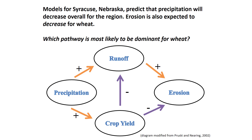This is a model for Syracuse, Nebraska, which predicts that precipitation will decrease overall for the region. Erosion is also expected to decrease for wheat. The dominant pathway is: a decrease in precipitation leads to a decrease in runoff, which causes a decrease in erosion. Note that crop yield will also decrease due to less available water, which would contribute to an increase in erosion, but this effect is smaller than that of decreasing runoff. Why would a decrease in runoff cause a decrease in erosion? There is less water to carry sediment and soil away.